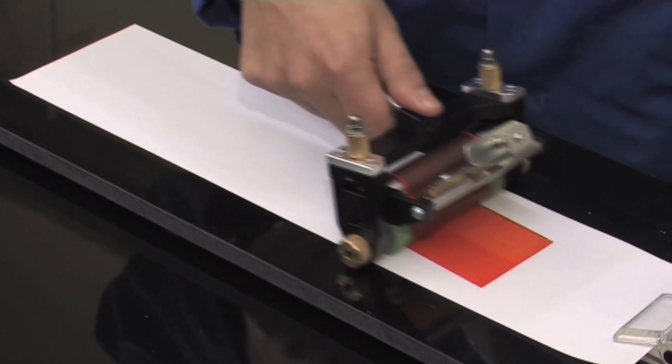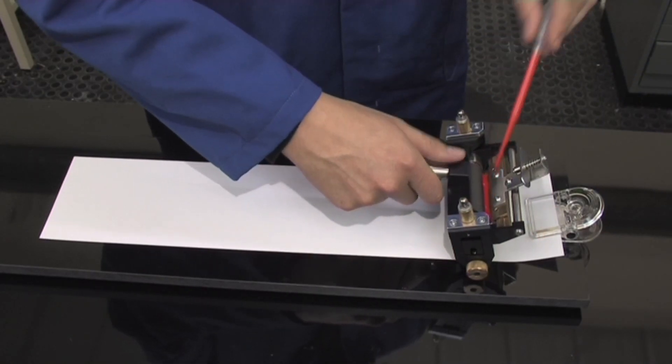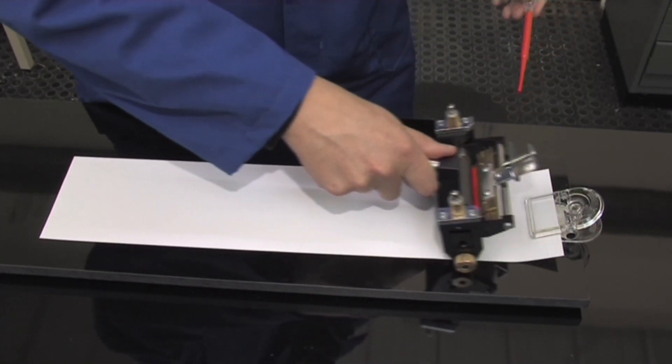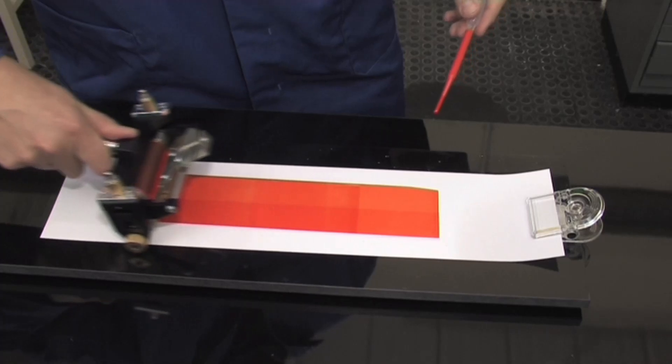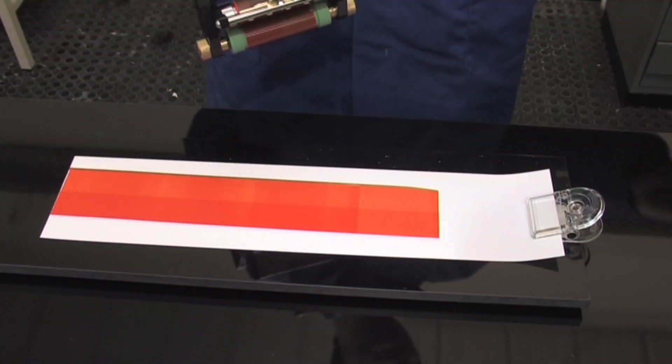The unit is then pulled over the substrate to produce proofs up to a meter long and 70 millimeters wide. The result? Accurate proofing of all Flexo inks, including high viscosity.